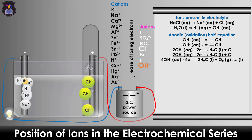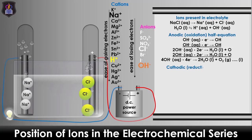However, the hydrogen ion is always preferentially discharged due to its lower reactivity and position in the electrochemical series. The ease of gaining electrons increases down the series for cations, as less energy is required to undergo reduction. The hydrogen ions undergo reduction by gaining one electron each to form hydrogen atoms.